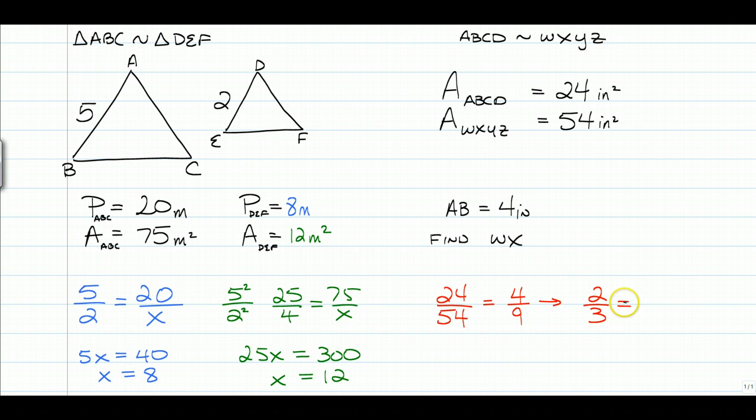So that means, now that we know that the side ratio is 2 thirds, we have AB is 4 inches over an unknown length, cross multiply, 2X is equal to 12. So we know that WX is equal to 6 inches.